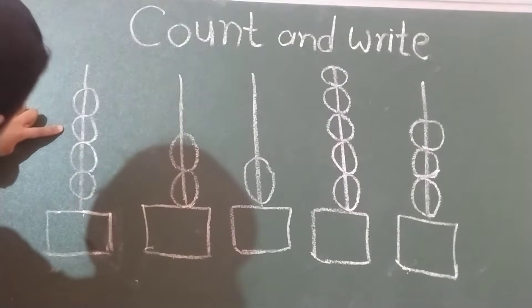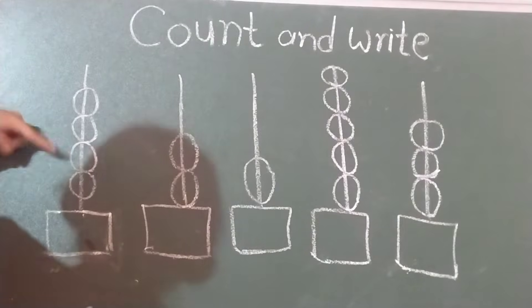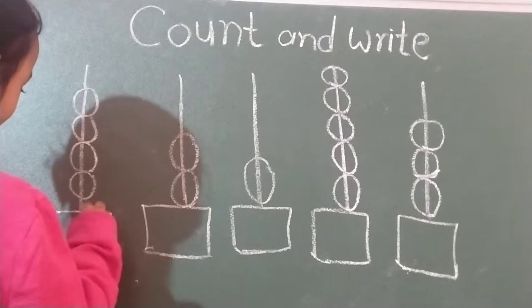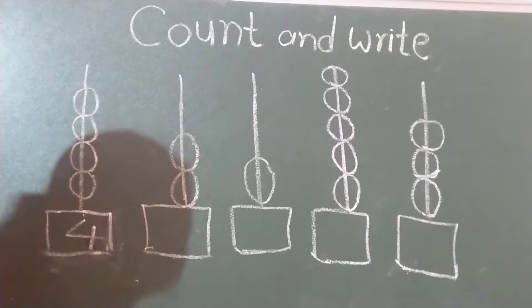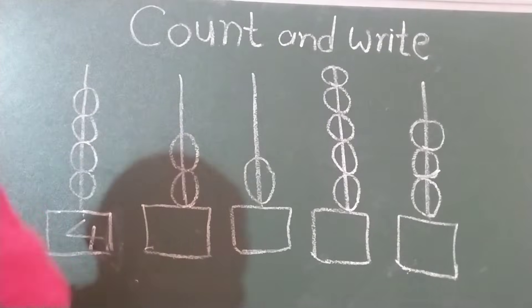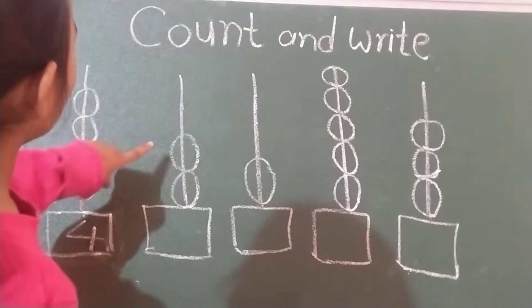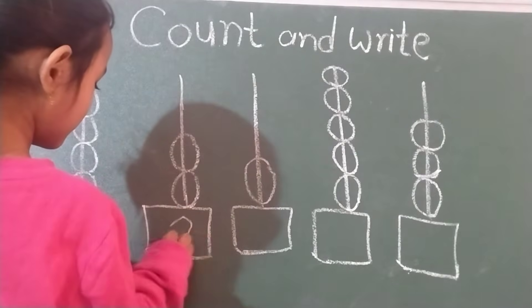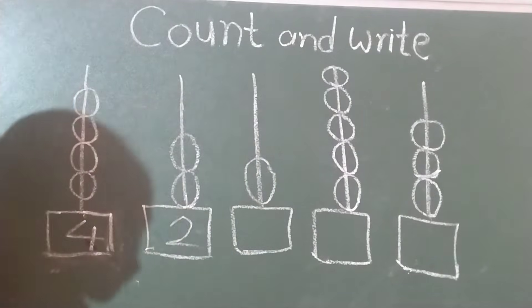One, two, three, four. Then which number you write? Four. Very good. Next. One, two. Two.